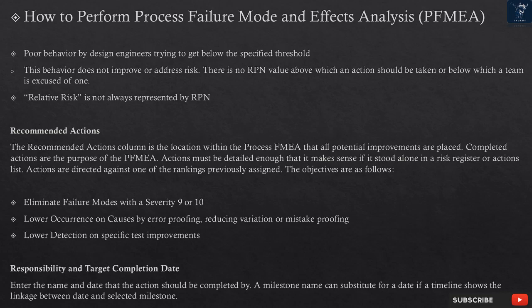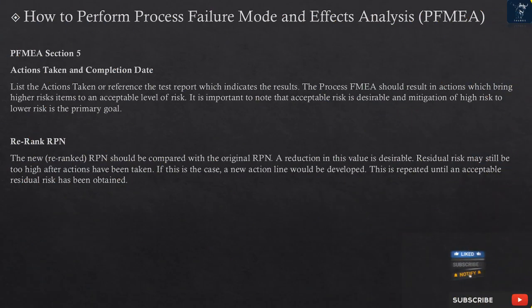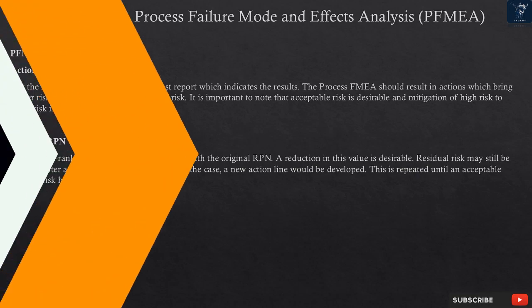Responsibility and Target Completion Date: Enter the name and date that the action should be completed by. A milestone name can substitute for a date if a timeline shows the linkage between date and selected milestone. FMEA Section 5: Actions Taken and Completion Date. List the actions taken or reference the test report which indicates the results. The process FMEA should result in actions which bring higher risk items to an acceptable level of risk. It is important to note that acceptable risk is desirable and mitigation of high risk to lower risk is the primary goal. Re-rank RPN: The new re-ranked RPN should be compared with the original RPN — a reduction in this value is desirable. Residual risk may still be too high after actions have been taken. If this is the case, a new action line would be developed. This is repeated until an acceptable residual risk has been obtained.